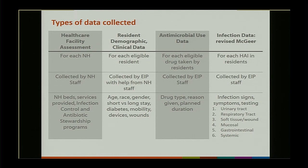The types of data collected: first, a healthcare facility assessment — very similar to the NHSN annual survey completed as part of participation requirements. Each nursing home completed one, with data collected by nursing home staff such as the director of nursing or infection preventionist — questions about number of beds, types of services, infection control, and antibiotic stewardship programs. For each eligible resident on a given survey date, EIP staff collected age, race, gender, whether the resident was short-stay or long-stay, whether they had diabetes, and mobility status.